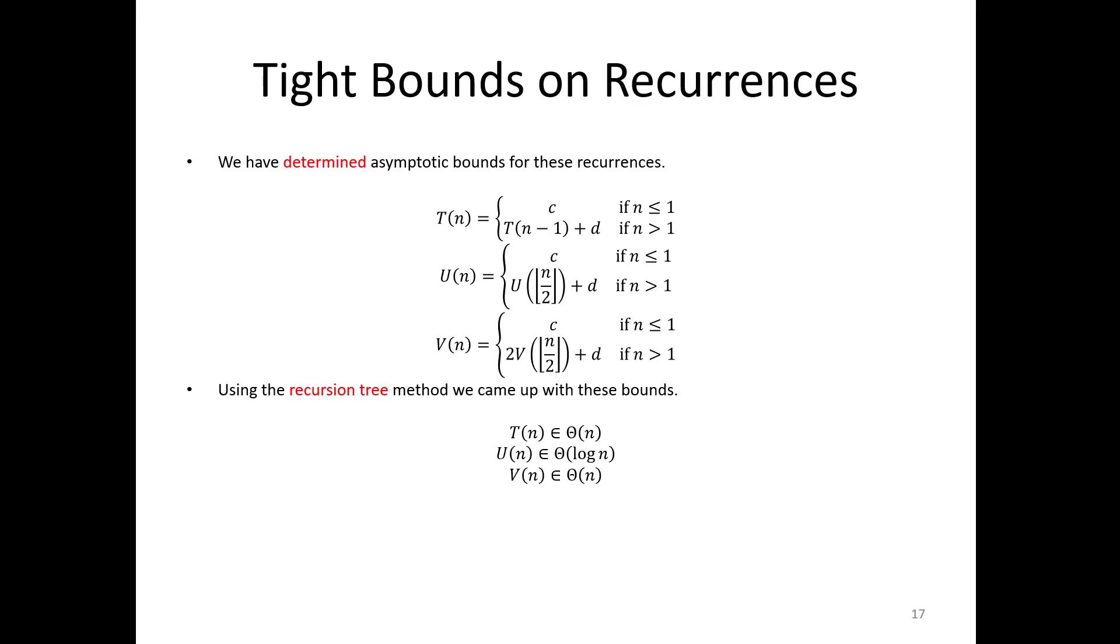Again, it was for that strange linear search algorithm that we came up with where we looked at the middle element, and then we recursively looked at the left half and the right half to see if our element was in both. That gave us two recursive calls, each about half the size. This was sort of a bizarre algorithm, and our guess was that it was linear time as well. But are we going to be able to prove that it's linear time? Well, that's the goal of this video.